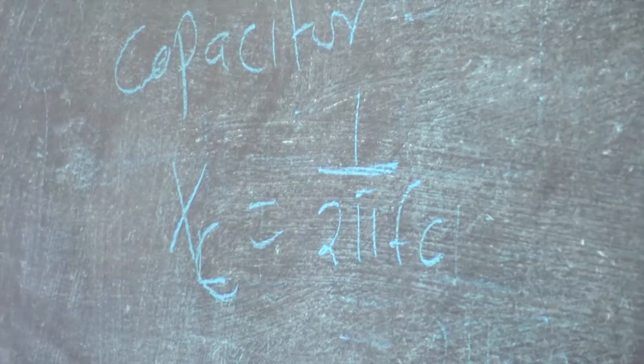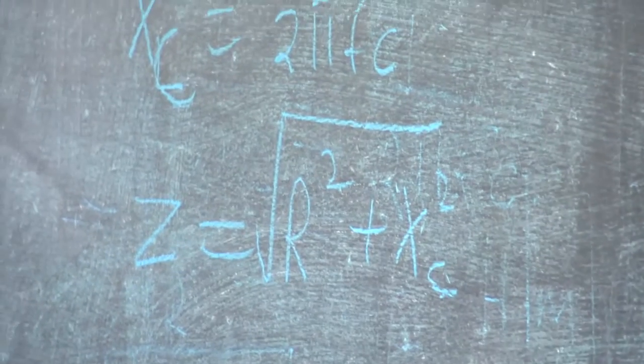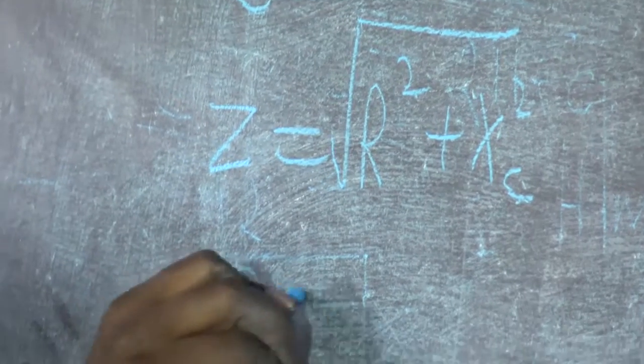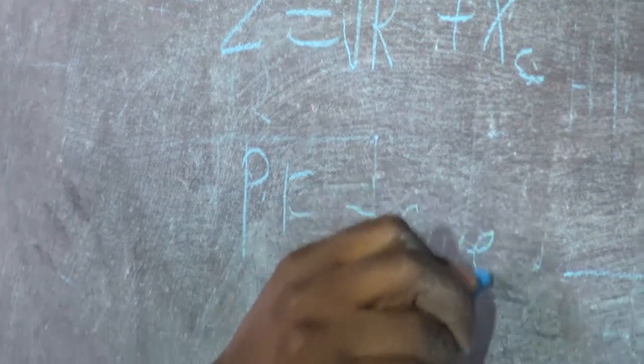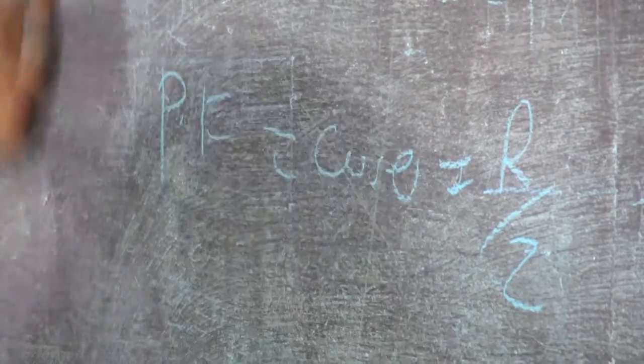And Z is given by R squared plus XC squared, then square root. Also we have seen that power factor is given by cos theta, which is the same as R over Z. So these, you can if you have a circuit like this.